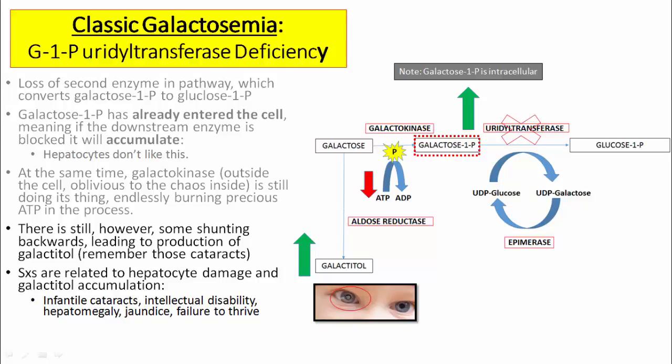Combining these effects, the clinical manifestations of classic galactosemia are related to hepatocyte damage from accumulation of galactose-1-phosphate, as well as galactitol accumulation. Together these typically present with infantile cataracts, intellectual disability, hepatomegaly, jaundice, and general failure to thrive.